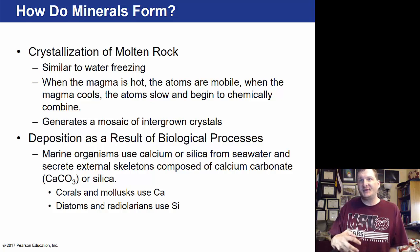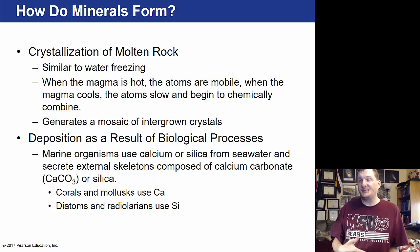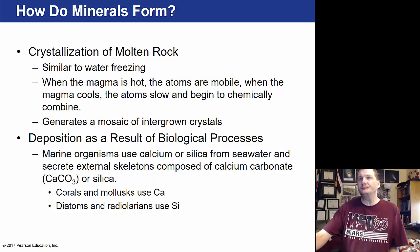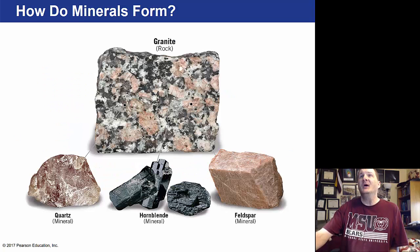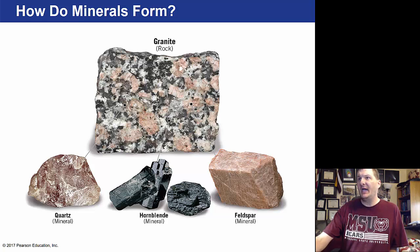Minerals can also form as a result of biological processes — marine organisms can use calcium or silica from seawater to create calcium carbonate or silica. Some examples of minerals and rocks include granite, which is a rock; quartz, hornblende, and feldspar are minerals. Feldspar has very specific ways it breaks off.